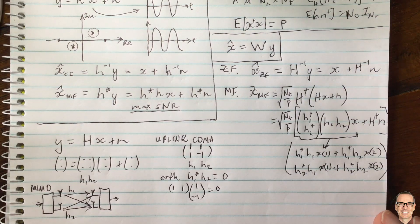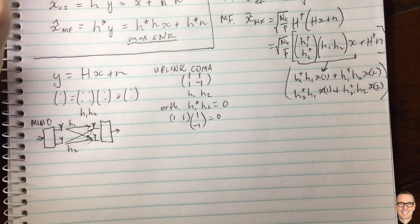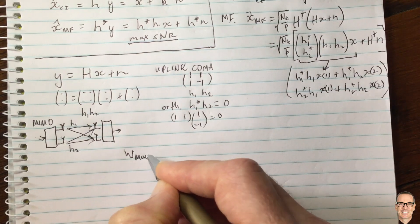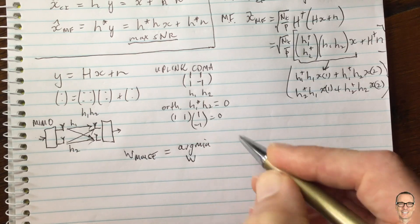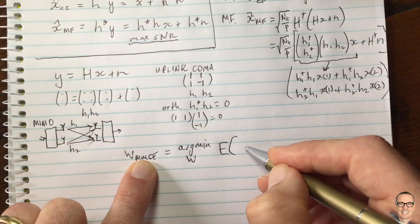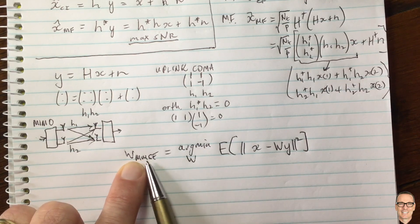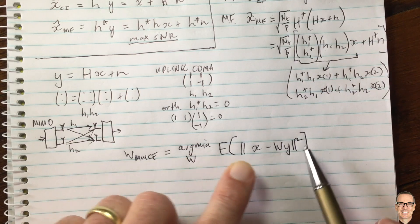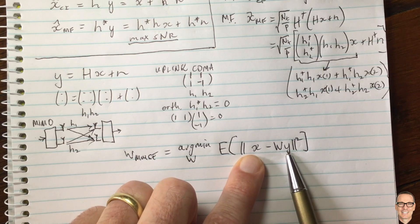In minimum mean squared error decoding, the MMSE filter W is chosen as the argument that minimizes over W the mean of the squared error — that is, the mean of the squared norm of x minus W times y. So you're picking the filter W that minimizes the mean squared error between x and W y.